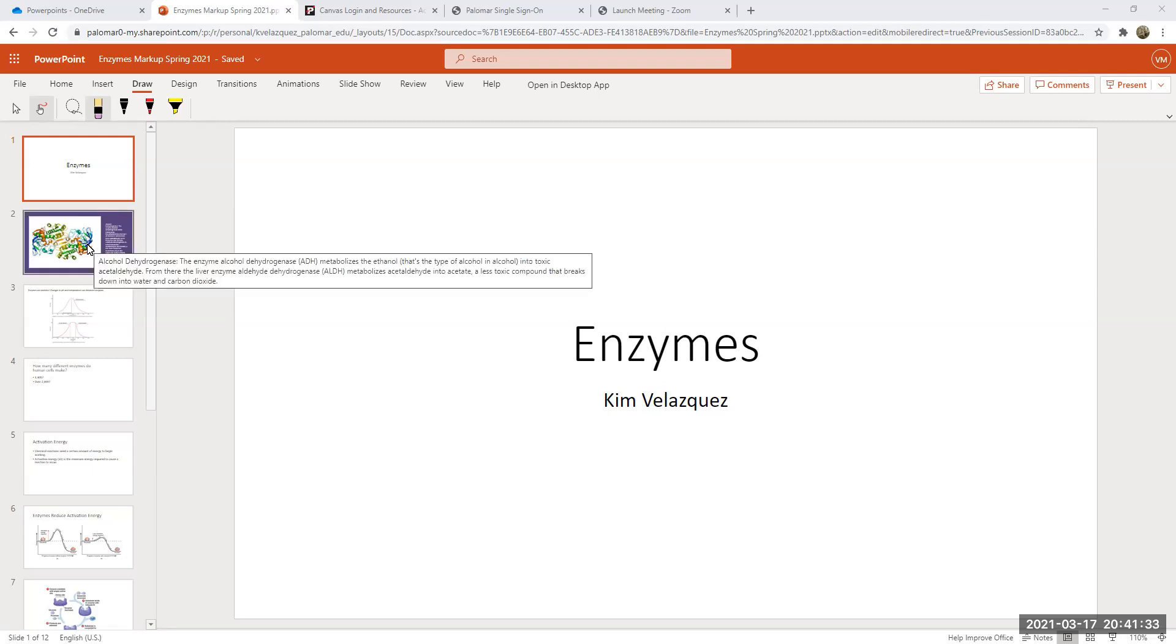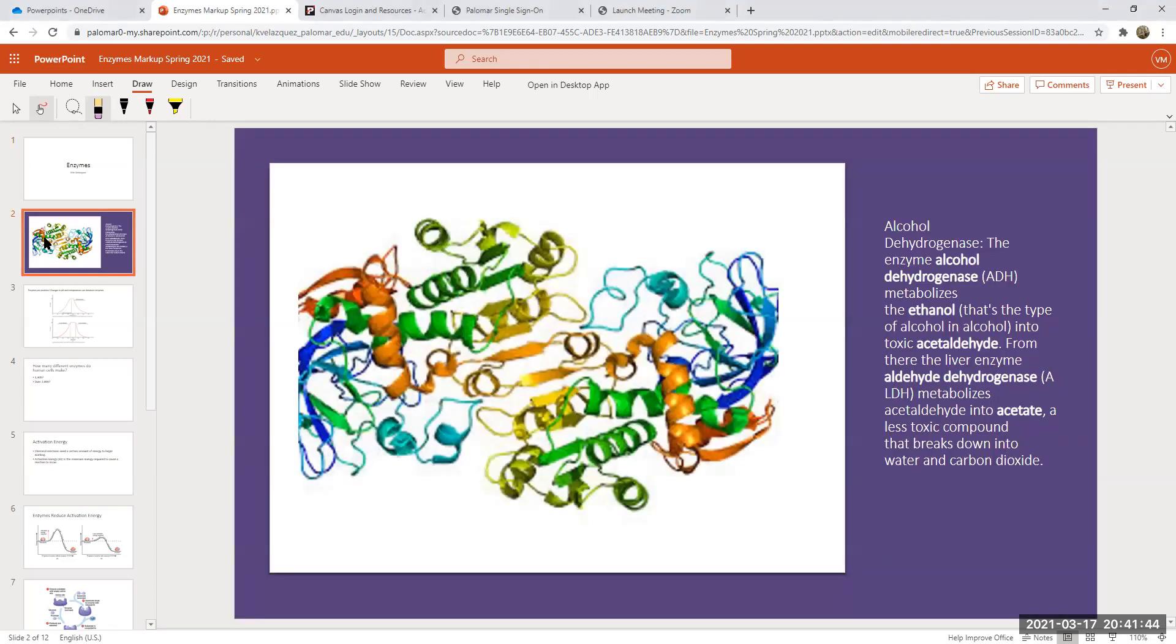We've already talked about enzymes a little bit and given specific examples. Remember that enzymes are proteins, and because they're proteins, they have a very specific three-dimensional shape. This is an example of an enzyme called alcohol dehydrogenase.